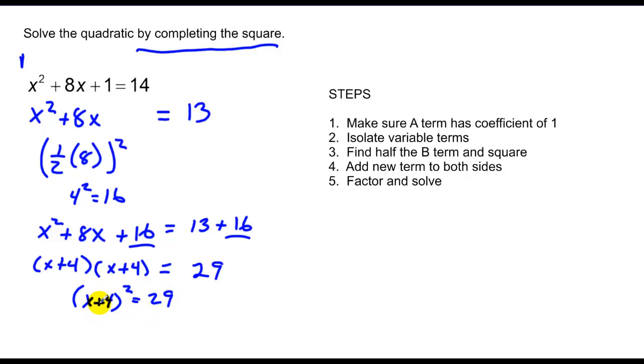So this is x plus 4 quantity squared equals 29. I'm back to that problem we're comfortable with now. Take the square root of both sides. Plus and minus on the right term. So I have x plus 4 is equal to plus and minus the square root of 29. Therefore, x equals negative 4 plus or minus the square root of 29. And I'm done. And that's completing the square in a nutshell.